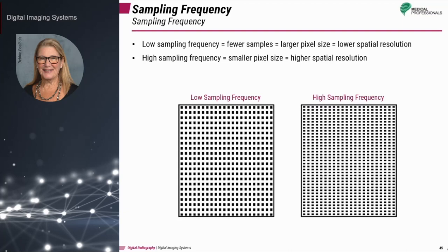Sample frequency is the number of pixels sampled per millimeter and controls spatial resolution in CR. More pixels sampled means increased spatial resolution. However, sample frequency can change from vendor to vendor, varying from 5 to 20 pixels per millimeter. The choice of sample frequency is based on plate size. Low sample frequency means fewer samples, larger pixel size, and lower spatial resolution. High sample frequency gives smaller pixel sizes, more of them, and higher spatial resolution.